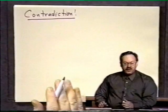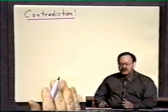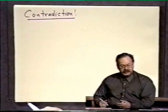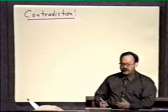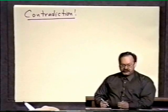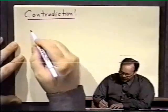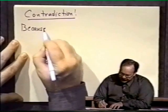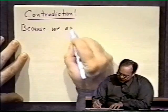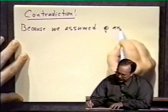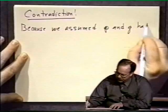Why is that a contradiction? Well, we assumed originally that p and q had no factors in common. And now we have proven, under the assumption that square root of 2 is rational, we have proven that p and q have a factor in common, the factor 2. This is a contradiction because we assumed p and q had no factors in common.